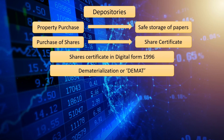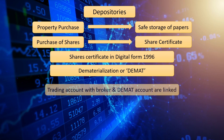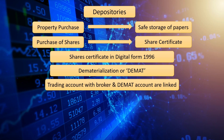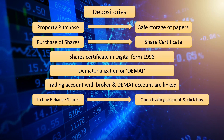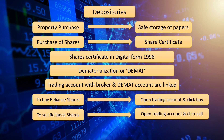A demat account in your name will have all the shares in electronic form that you have bought. Think of a demat account as the digital vault for your shares. The trading account from your broker and the demat account from the depositories are interlinked. For example, if you want to buy Reliance shares, all you need to do is open your trading account, look for the prices of Reliance, and buy it. Once the transaction is complete, the role of your trading account is done — after you buy the shares of Reliance, they will automatically come and sit in your demat account. Likewise, if you want to sell the shares of Reliance, all you have to do is open your trading account and sell the stock. In the backend, the shares sitting in your demat account will get debited and the shares move out of your demat account.